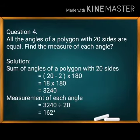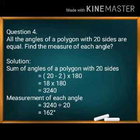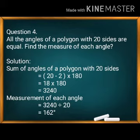Problem 4: All the angles of a polygon with 20 sides are equal. Find the measure of each angle. First, find the total sum: (20 − 2) × 180 = 18 × 180 = 3,240 degrees. Since all 20 angles are equal, each angle = 3,240 ÷ 20 = 162 degrees.